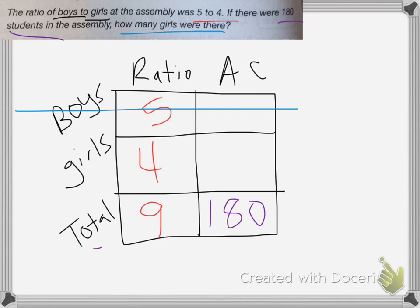I don't need to know how many boys there are, so I'm going to cross that column off because I don't need to know. I'm looking for how many girls there are. Now I can create my proportion.